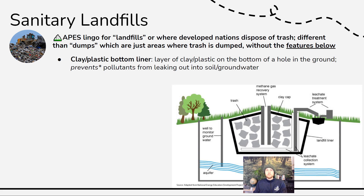We have a diagram here that we'll be referencing. The first thing to notice is the black perimeter around the landfill — that's a clay or plastic bottom liner. This liner is meant to line the hole in the ground and try to prevent pollutants from leaking out into groundwater or nearby soil. However, most landfills do have some residual level of pollutants leaking out, so despite our best efforts to contain them, it's not a perfect system, and there is often some contamination of nearby groundwater and soil.